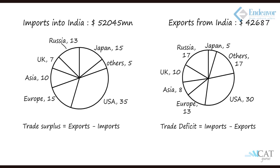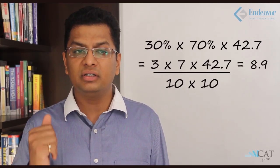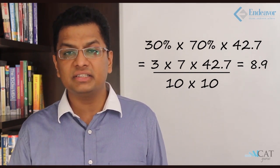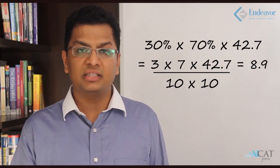So let's say it is 42.7 billion. Out of this, USA has 30%, and then 70% of that is software exports. So 42.7 × 30 × 70. Both of them are percentages. This will give us the actual value of exports. Let's calculate: 3 × 7 × 42.7 ÷ 100, because 30% is 3/10. We get the answer which is 8.9.